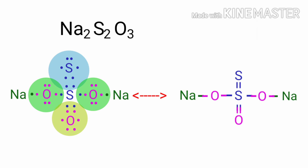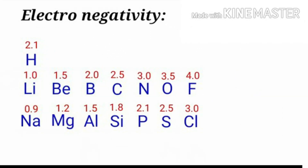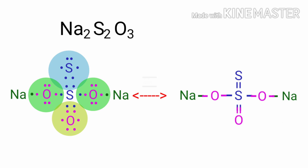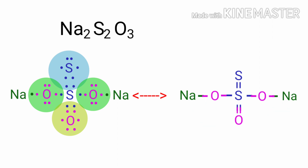Now we can write the oxidation numbers of each element. As per the electronegativity chart, oxygen has more electronegativity than sodium. So in the Na-O bonds, the oxygen atoms take the bonds towards itself. Therefore, the oxidation number of sodium is plus one and the oxidation number of oxygen is minus one.